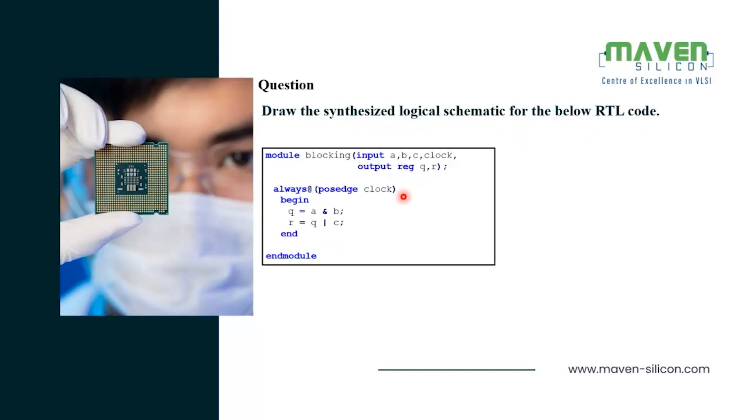This code has a list of four input ports that is A, B, C, clock and has a list of two output ports Q and R of register type.